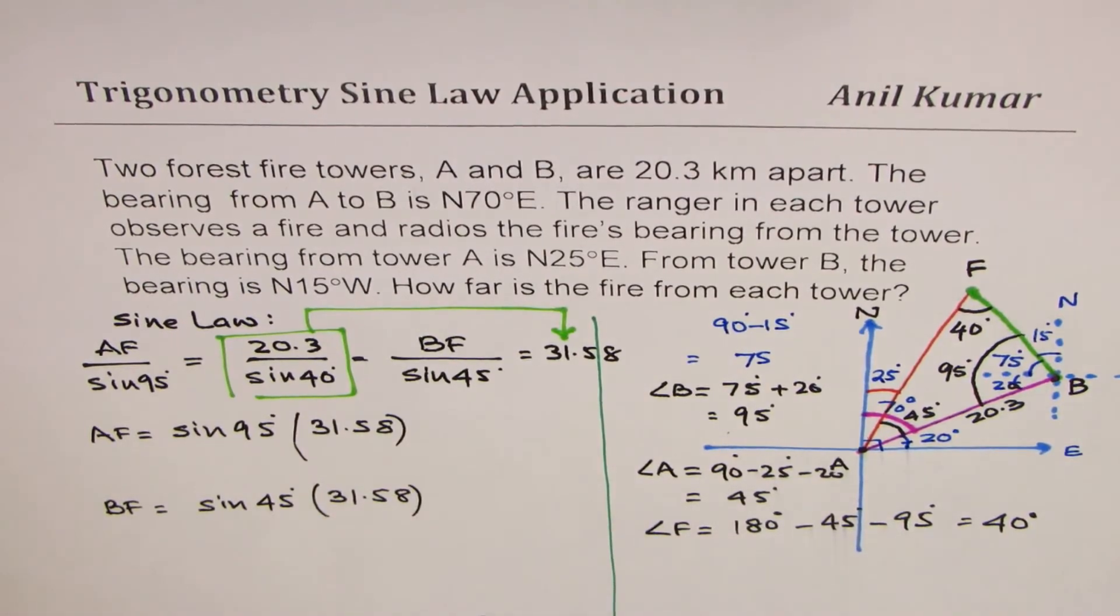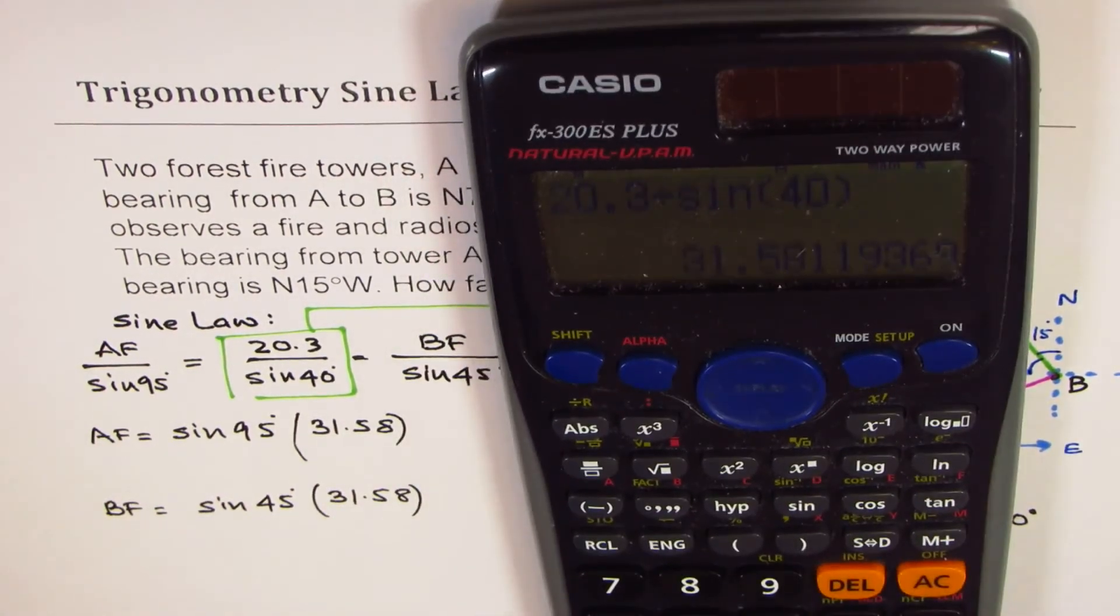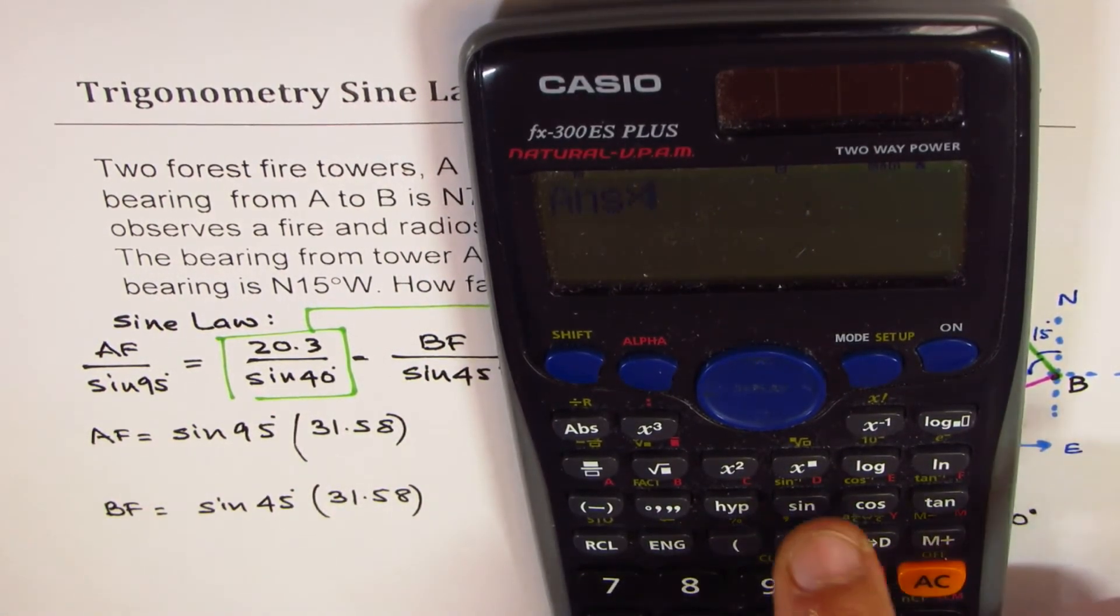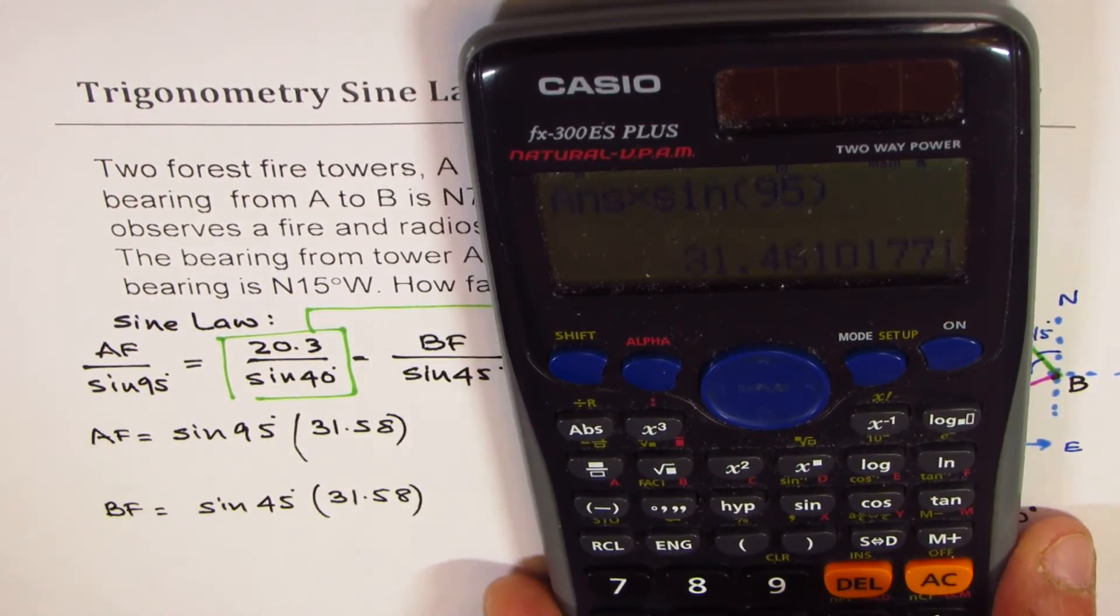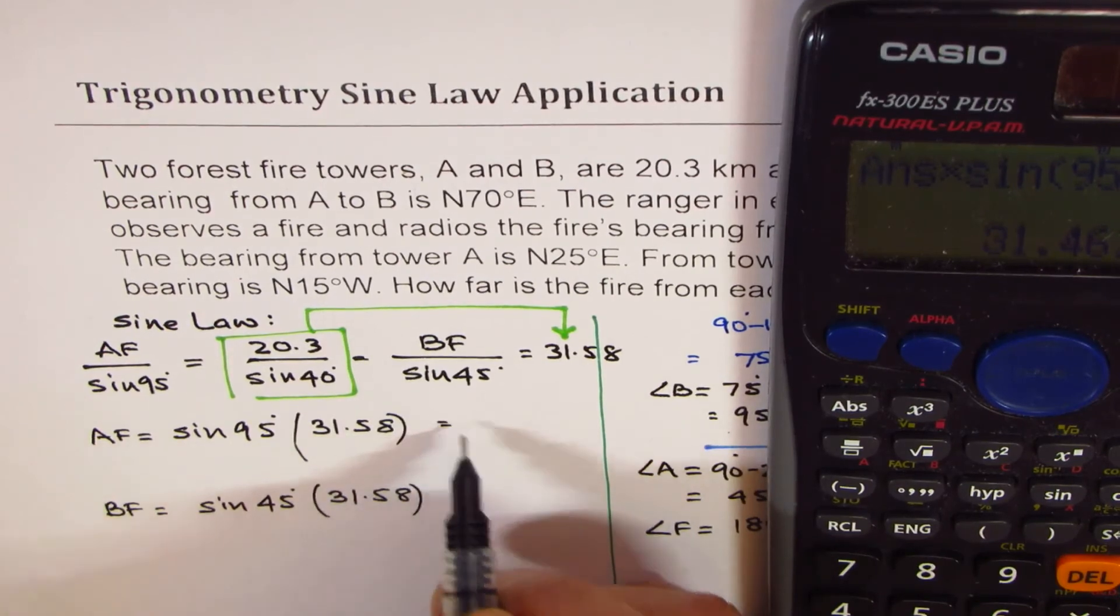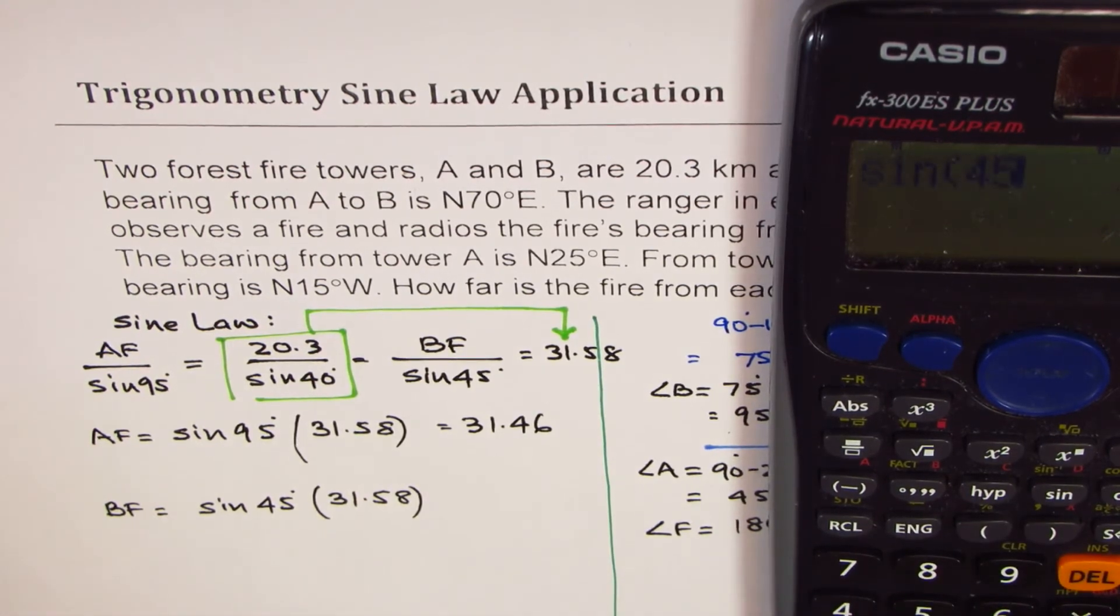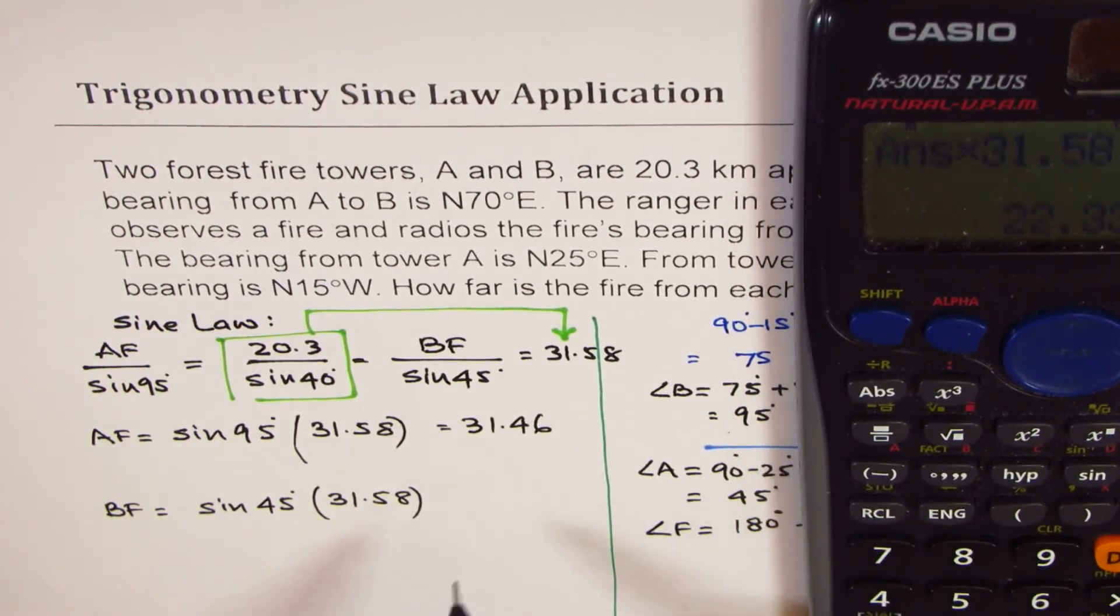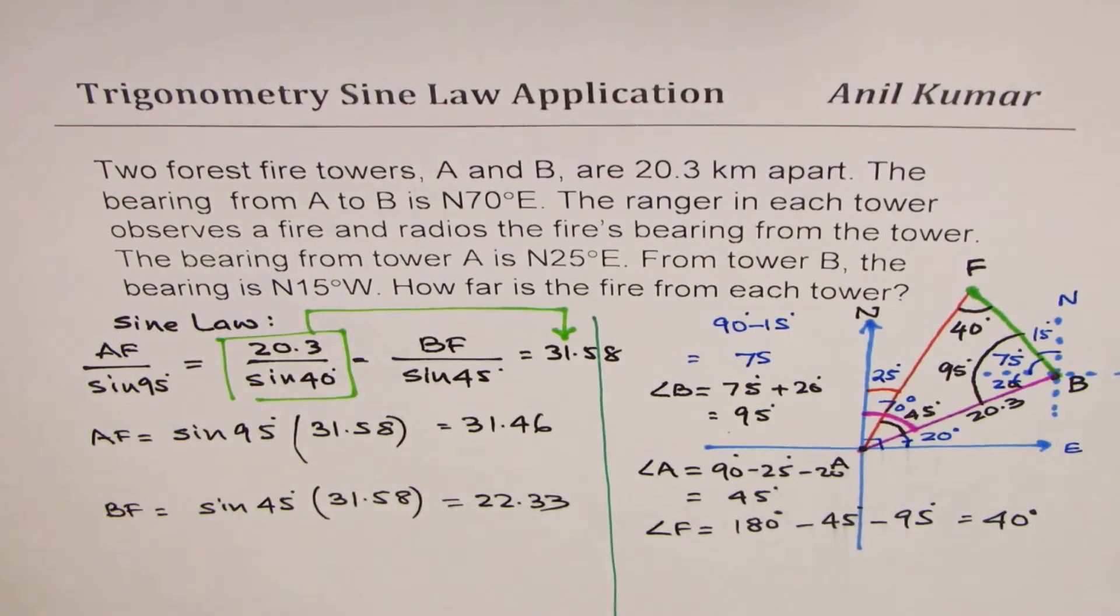And BF is equal to sine of 45 degrees times 31.58. Does it make sense? So that is how you calculate. So I have this number here. I didn't really round it, but we'll round later. Times sine of 95 gives us 31.46. So we get this as 31.46. For BF, it is sine 45 times 31.58, which is 22.33.